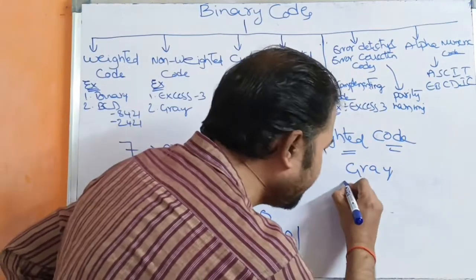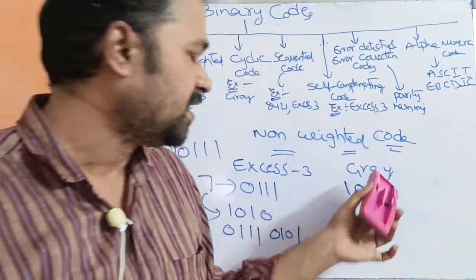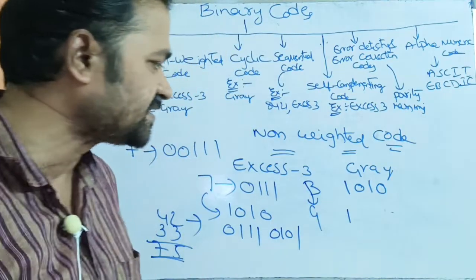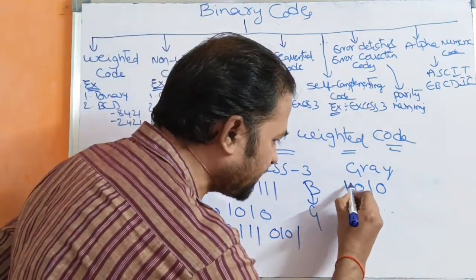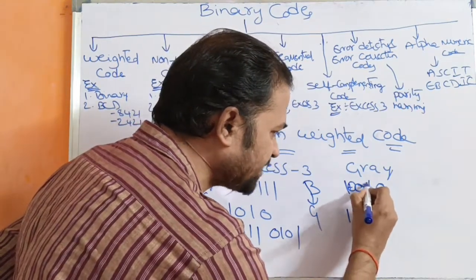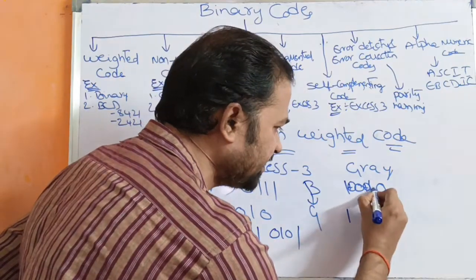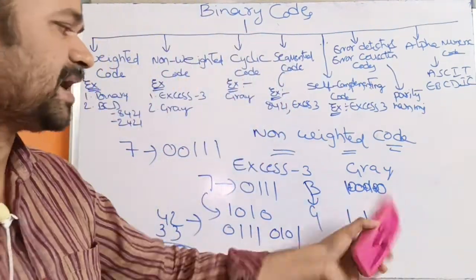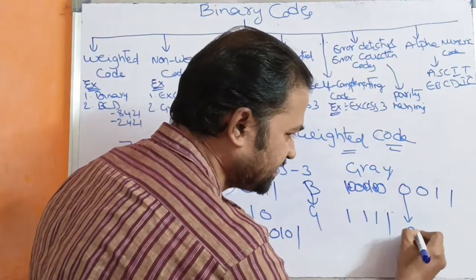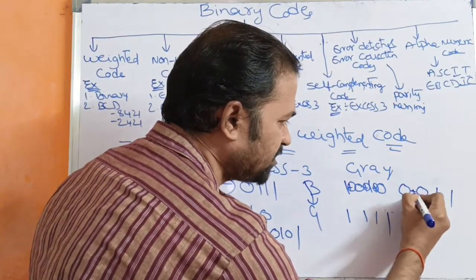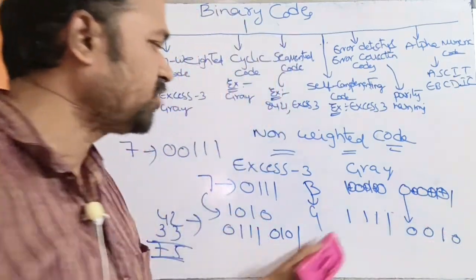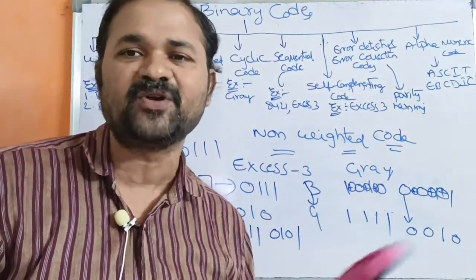Next one is grey code. Let the binary number be 1 0 1 0. We can convert this binary number to grey code as follows: keep the first bit as it is. The next bits are obtained by XOR operation with adjacent bits. 1 XOR 0 means 1, 0 XOR 1 means 1, and 1 XOR 0 means 1. For another example, 0 0 1 1: keep MSB as 0. Then 0 XOR 0 means 0, 0 XOR 1 means 1, and 1 XOR 1 means 0. Here XS3 code as well as grey code don't depend upon any weights — we don't have weights like 8 4 2 1.